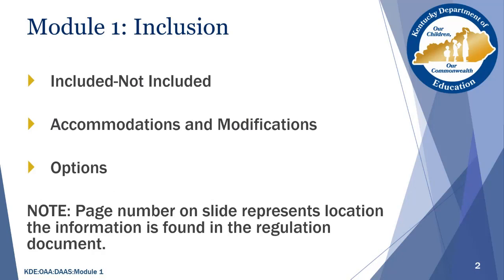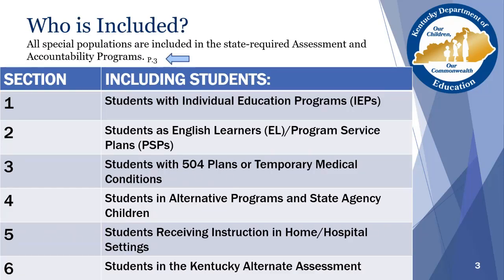Note the page number on this slide represents the location the information is found in the regulation document itself. The blue arrow at the top of the page reflects the location this information is found in the actual regulation document. Even though this training provides an in-depth look at all parts of the Inclusion of Special Populations Regulation, it does not give every detail like the actual regulation. If you need to know more, go to the regulation and look for the page number shared throughout this training.